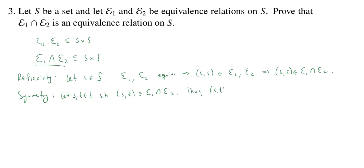Thus, (s,t) is in E1, and (s,t) is in E2. But now E1 is an equivalence relation, so it is symmetric. We're going to use the symmetry of E1, and that tells us that (t,s) is in E1. Similarly, since (s,t) is in E2 and E2 is an equivalence relation, it's symmetric, and so we know that (t,s) is in E2. But if (t,s) is in both E1 and E2, this implies that (t,s) is in the intersection.